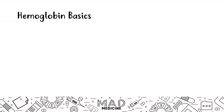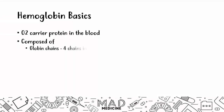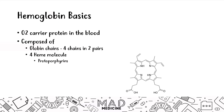Hemoglobin is an oxygen carrier protein found in the blood. It's composed of four globin chains located in pairs and four heme molecules, which consist of protoporphyrin and iron. Together, these two substances are going to create heme. This right here is the chemical structure of protoporphyrin, and when you combine iron with it, you're going to get heme.